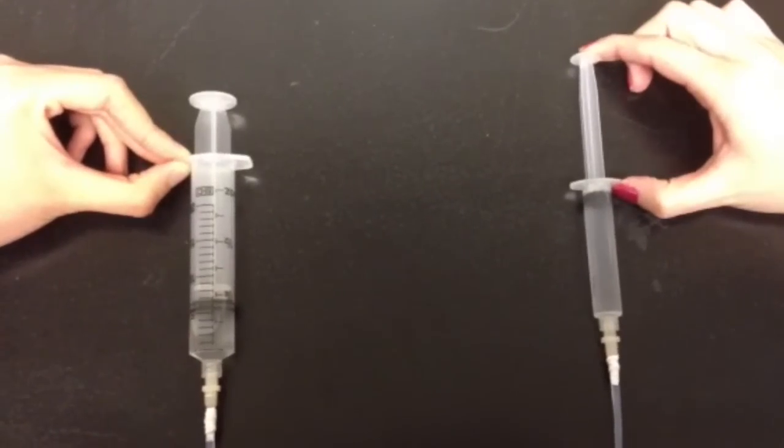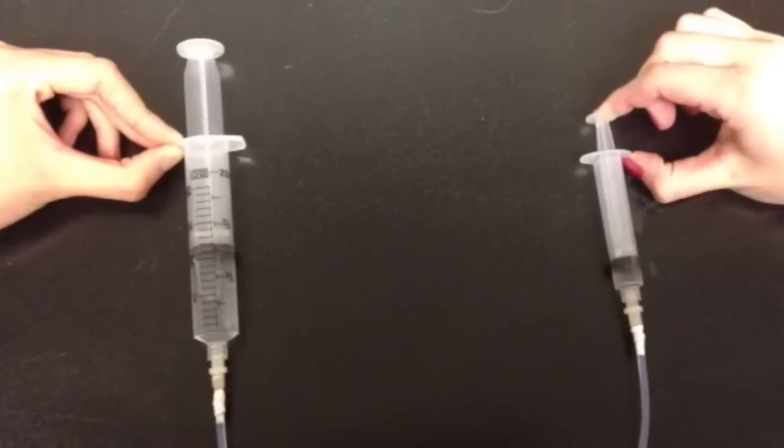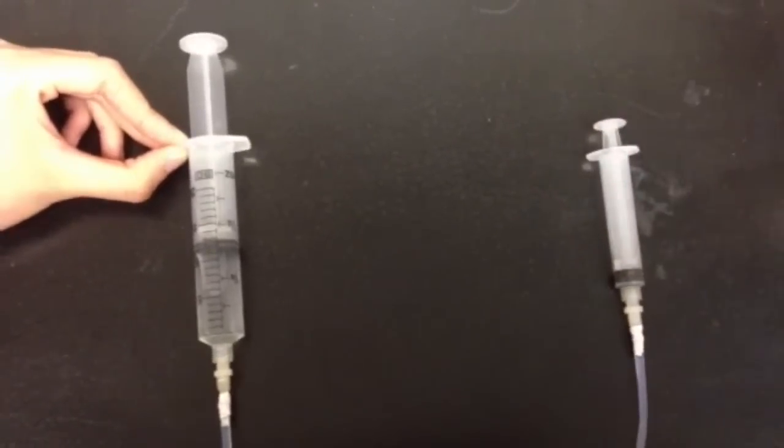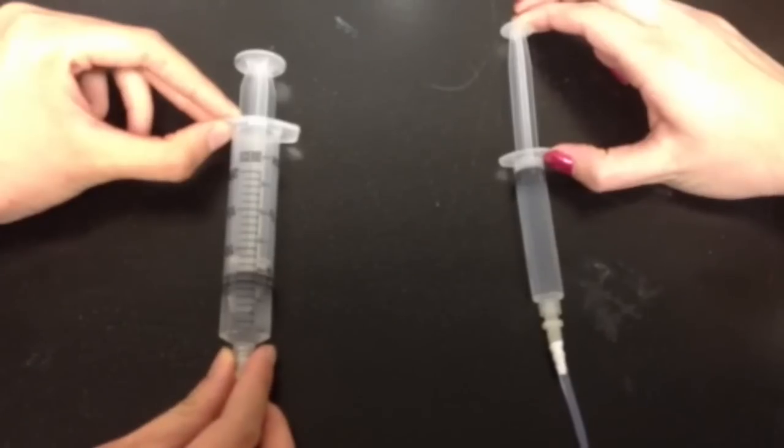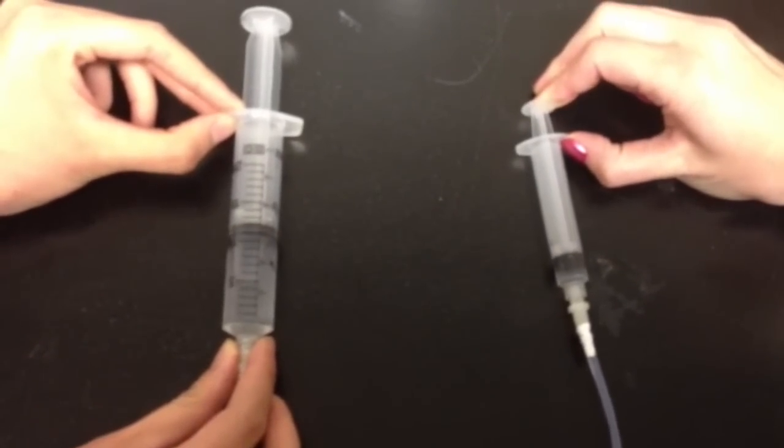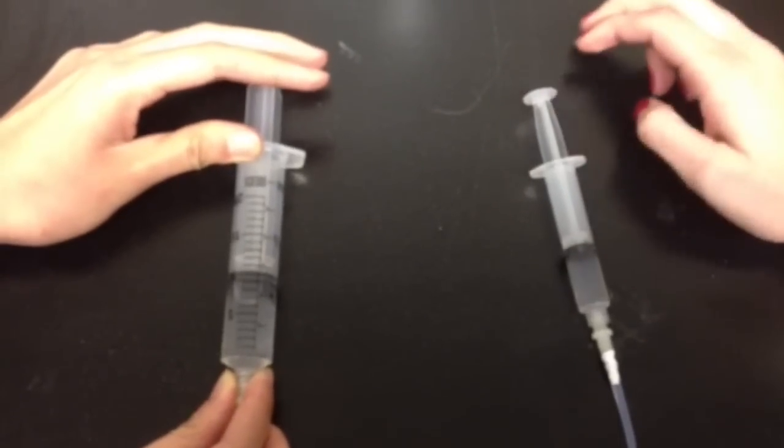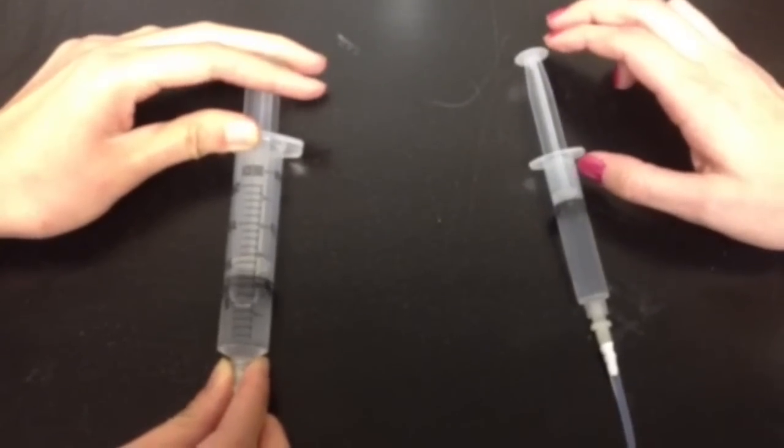One way to demonstrate this is to use a simple system of two syringes, tubing and water. When we apply pressure to push one syringe down, the other syringe goes up. Because the fluid is incompressible, the pressure is transmitted from the first syringe to the second syringe, causing it to fill with water.